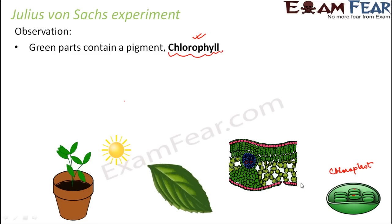Chloroplasts are cell organelles present only in plant cells, not in animal cells. Julius von Sachs concluded that the green parts of the plant contain a pigment called chlorophyll, which is present inside the organelle called chloroplasts. It was also observed that in the absence of sunlight, the starch which had been stored in the plant gradually decreased and then disappeared.